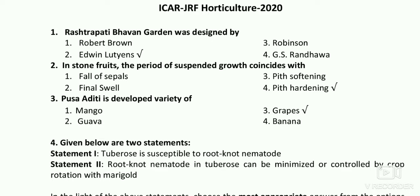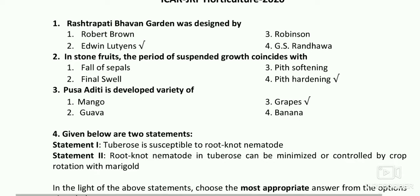Pusa Aditi is a developed variety of grapes. It is a hybrid variety, a cross between Bunchosia and Perlette — early maturing and seedless, tolerant to anthracnose and powdery mildew. Remember all varieties resistant to biotic and abiotic stresses. Pusa Trisar is also tolerant to anthracnose, powdery mildew, and termites. Pusa Swarnika is tolerant to powdery mildew and anthracnose.